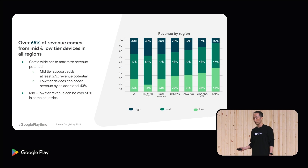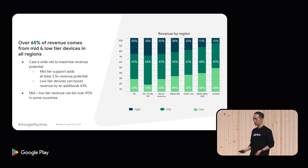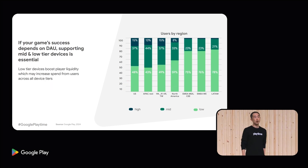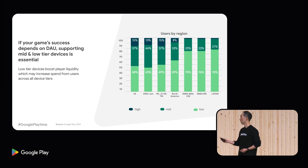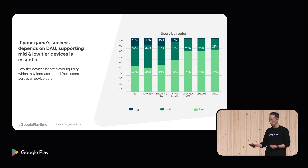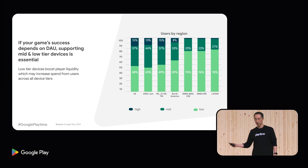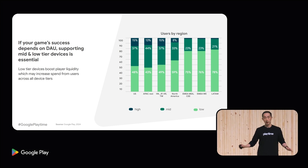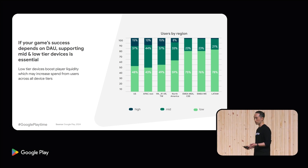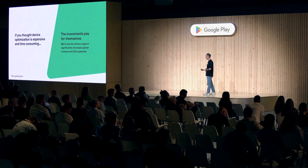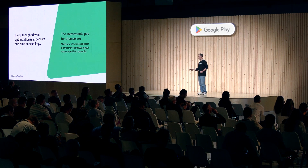Of course, different markets need different strategies, so please utilize the chart and revise your strategy accordingly. If your game relies on DAU, then your game really needs to focus on mid and low. For example, in the US, mid and low tier devices account for 85% of the total number of users. It goes even higher in other countries, over 90% in many. Even in some APAC markets where high tier devices are popular, high tier is only 15% while the rest is 85%. So device optimization is not all about cost — it is actually all about your opportunities to be successful in global markets, and the investments pay for themselves.